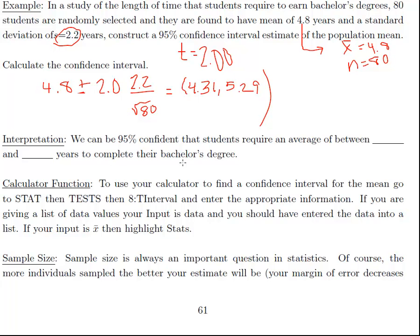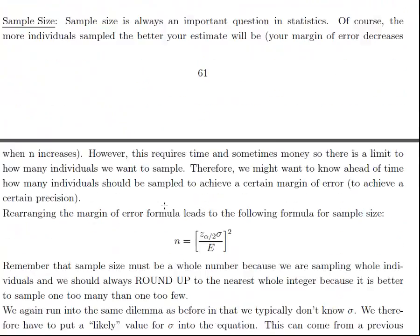Let's go back to the notes and finish this out. We want to interpret it. We can be 95% confident that students require on average between 4.31 and 5.3 years to complete their bachelor's degree. Notice a couple things: I state my confidence level, I use the word average, and I also have units. Quantitative variables have units, so I want to put that in there. It's important to remember to put the units in there.